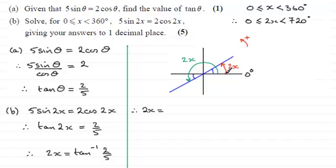This gives our first value for 2x: 21.80...°. This little blue angle is 21.80...°. We get the second value by doing 180° + 21.80° = 201.80...°.